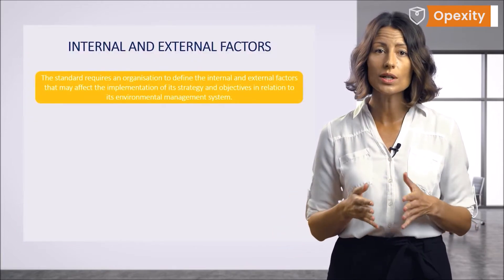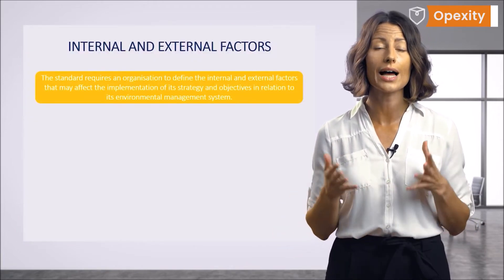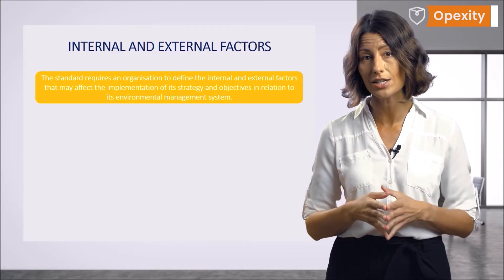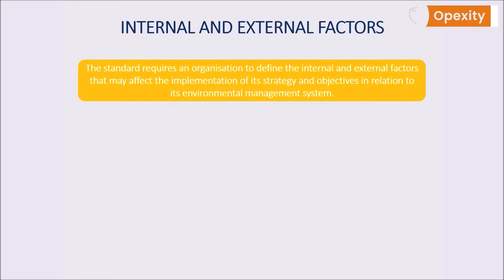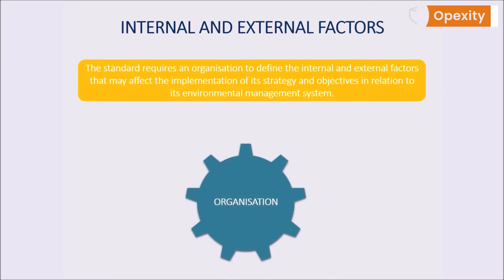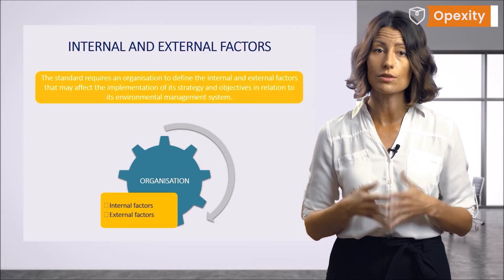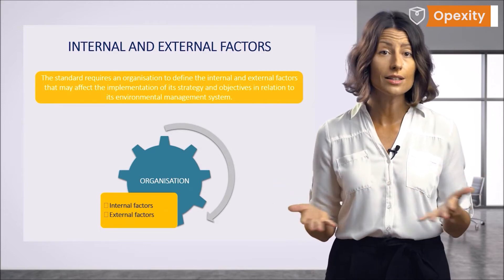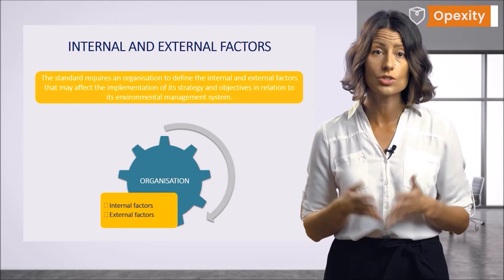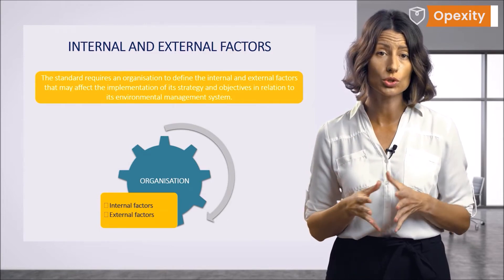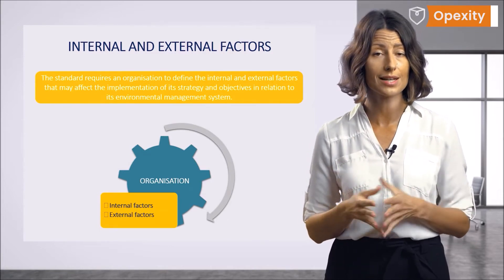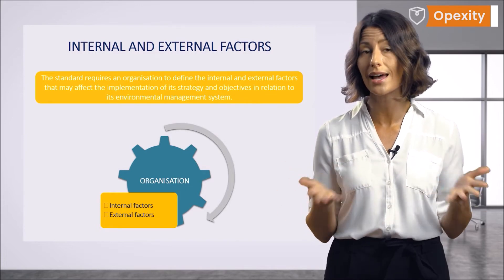The standard requires an organization to define the internal and external factors that may affect the implementation of its strategy and objectives in relation to its environmental management system. It is important to define those factors related to the organization's environmental performance that may affect the organization's main objective. Changes in the availability of resources, changes in the environment, changing legal requirements, and changing social expectations may be crucial, as they are factors of both risk and opportunity.